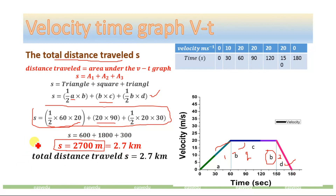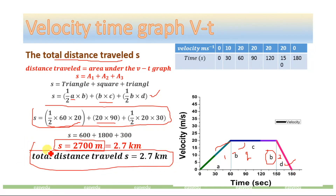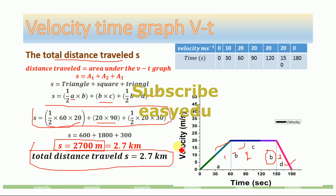So the total distance traveled, calculated from the velocity-time graph, is equal to 2700 meters, or 2.7 kilometers. Thank you for watching and don't forget to subscribe to EZUDIO for more videos.